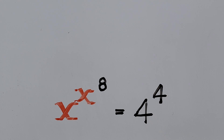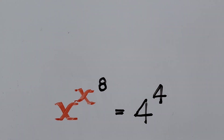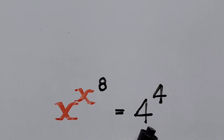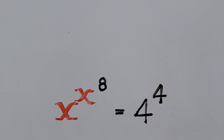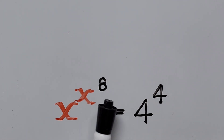Our impulse tells us that we make the base the same as its exponent. Considering the left-hand side, the base is x and the exponent is x to the power of 8. On the right-hand side, the base is 4 and the exponent is 4 — its exponent mirrors its base. Since our subject here is x, we focus our attention on the left-hand side of the equation.